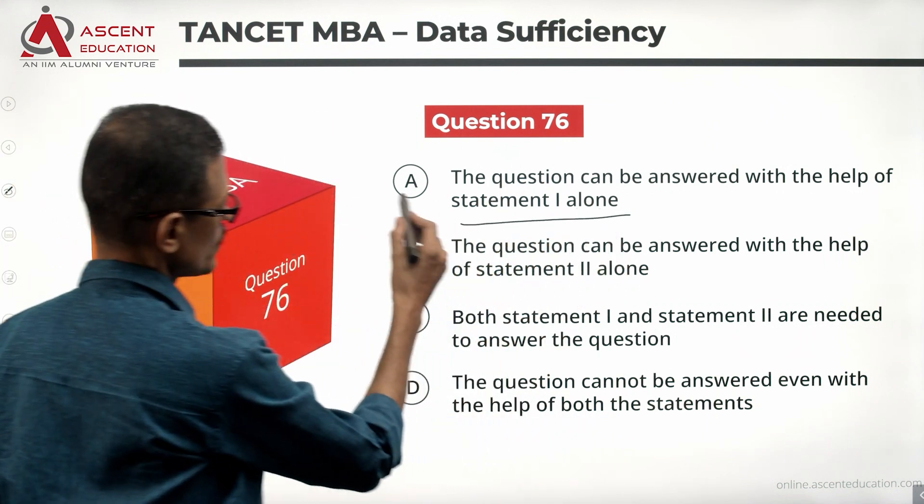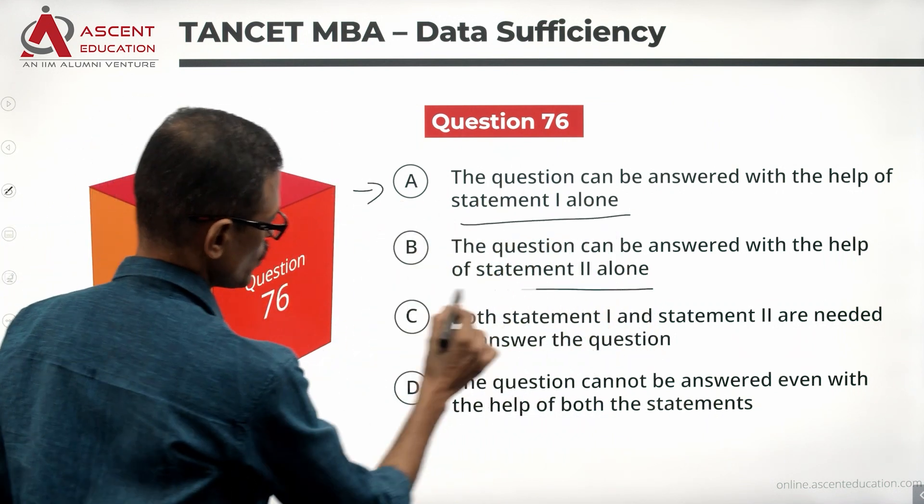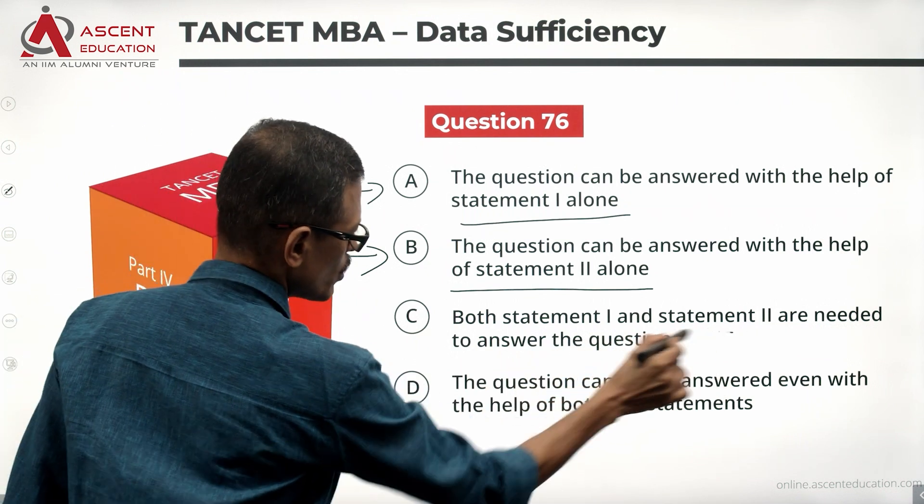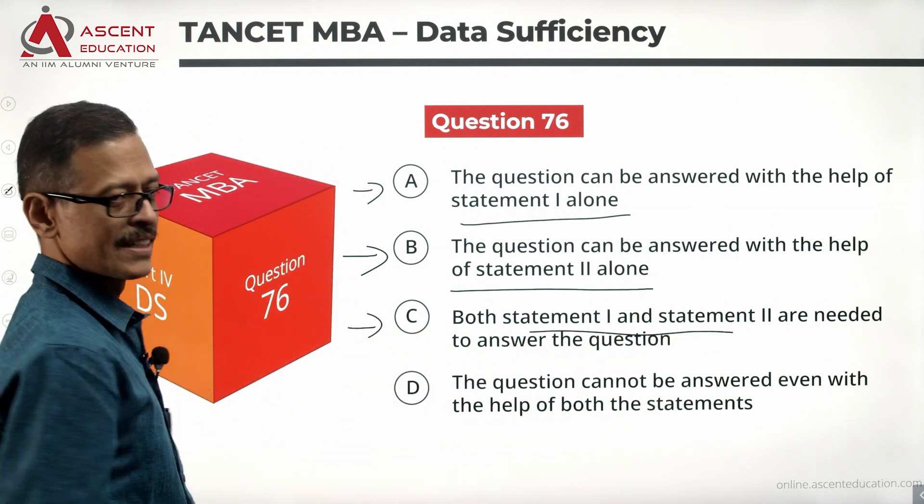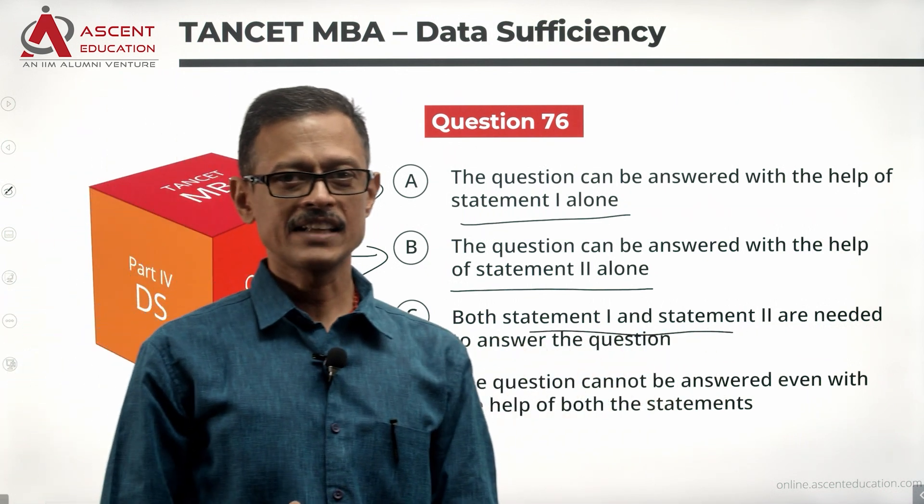Quick answer options. One alone is sufficient, answer option is A. Statement two alone is sufficient, answer option is B. Both statements are required, answer option is C. The given data is not sufficient, the answer option is D.